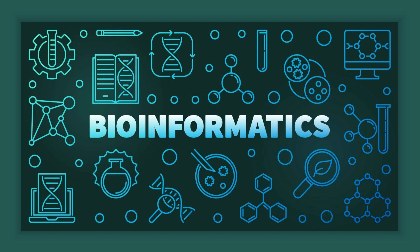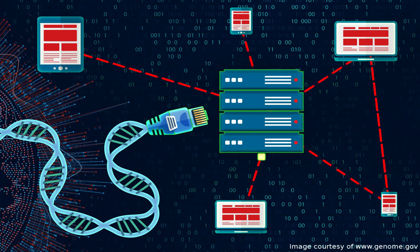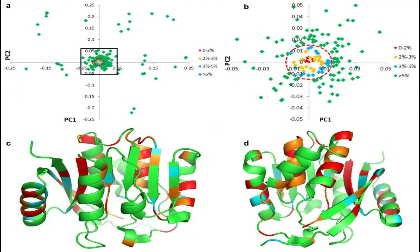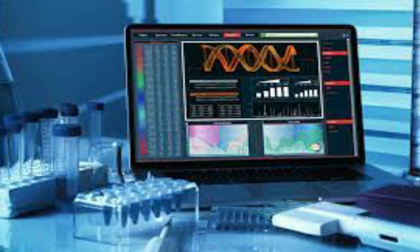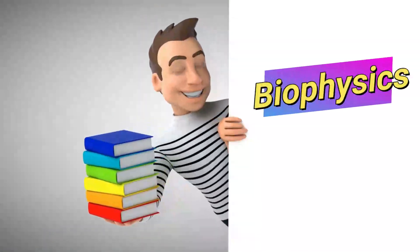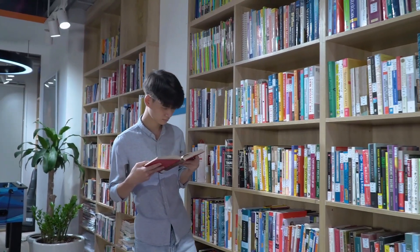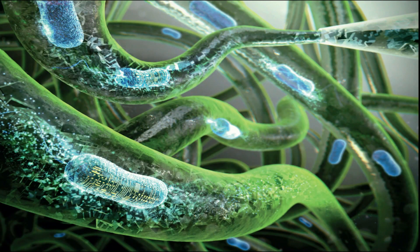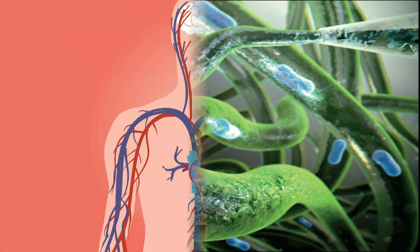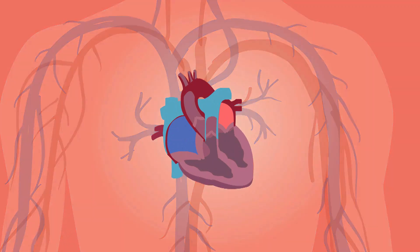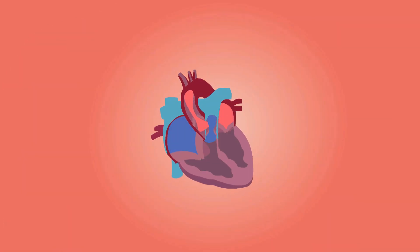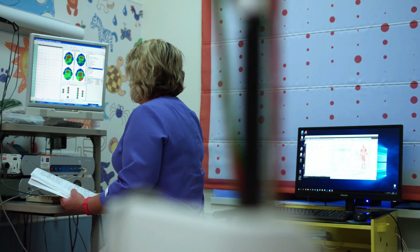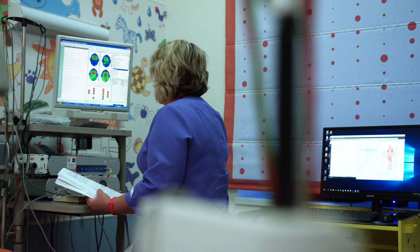The next branch is bioinformatics. It develops methods and software tools for understanding biological data. It is an interdisciplinary field mainly involving molecular biology, genetics, computer science, mathematics, and statistics. The next branch is biophysics — the application of physics to the study of biological processes using theories and methods of physics. Examples include fluid dynamics of blood flow, gas physics of respiration, and radiation in diagnostics or treatment.